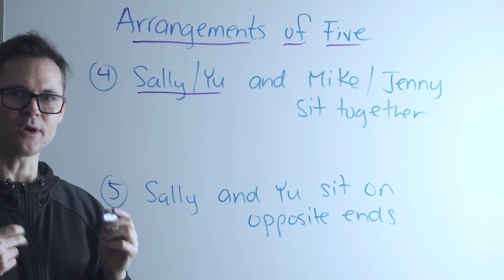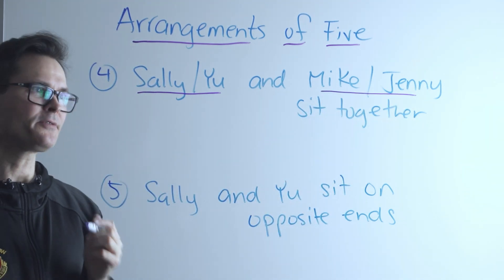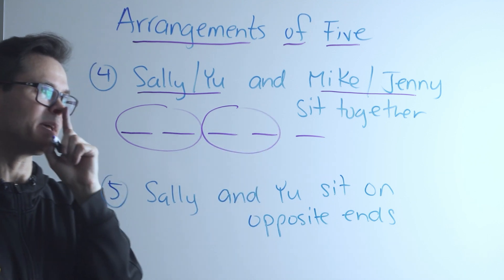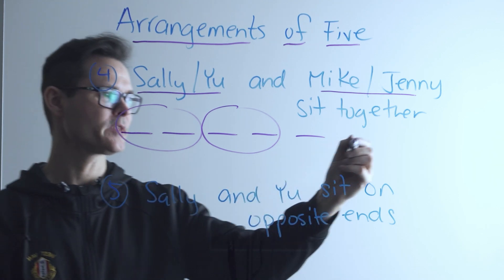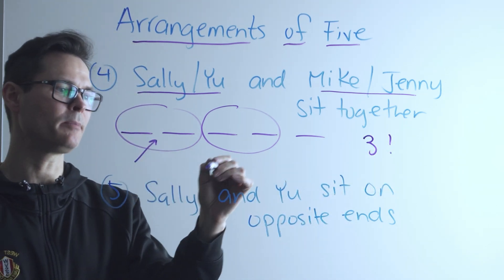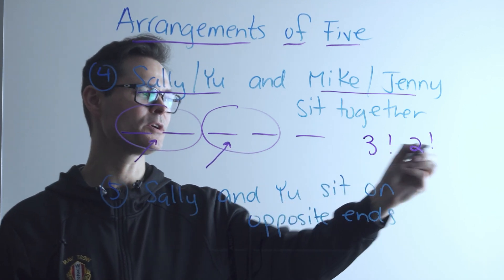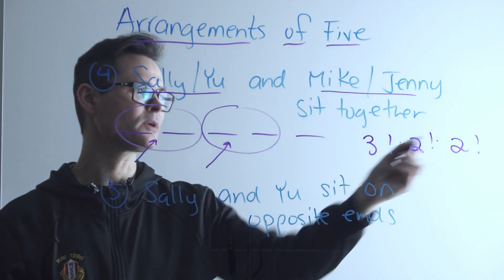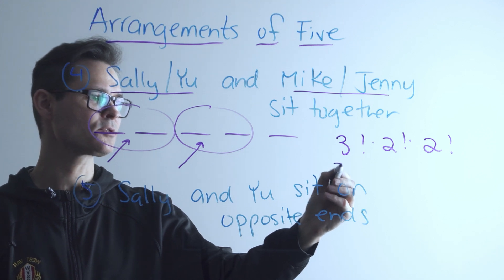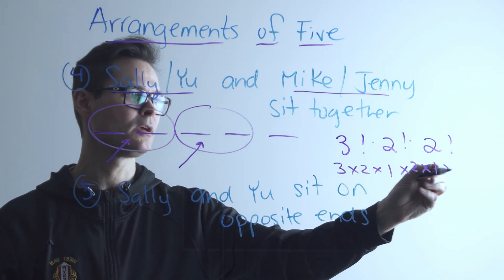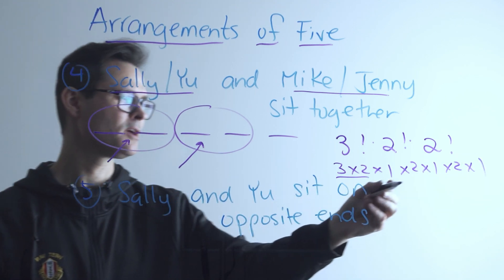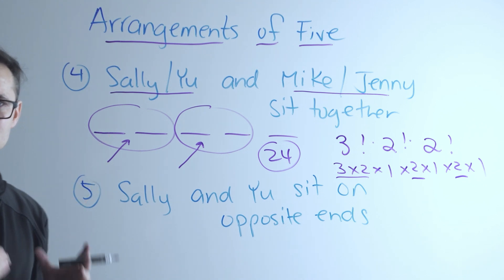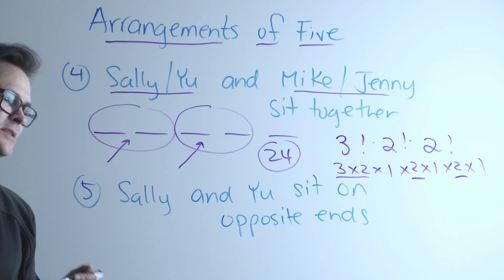Now let's say Sally and you want to sit together, and Mike and Jenny also want to sit together. With two couples treated as single objects, we have three objects, so three factorial arrangements. Within each love bubble there are two factorial ways to arrange the pair — two factorial for Sally and you, and two factorial for Mike and Jenny. Multiplying: 3! × 2! × 2! = 3 × 2 × 2 × 2 = 24.